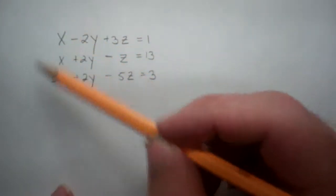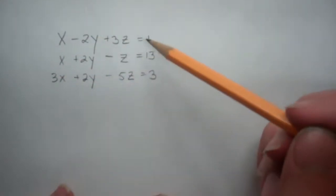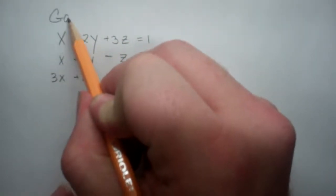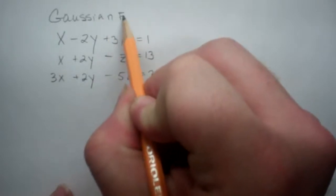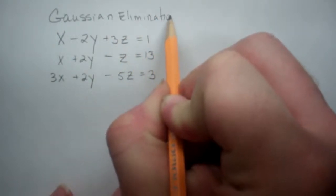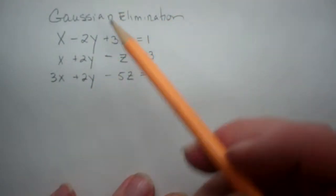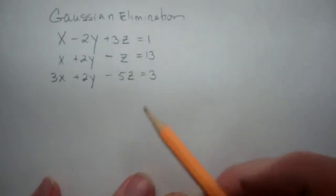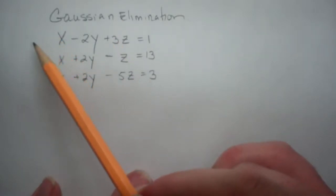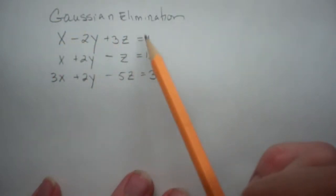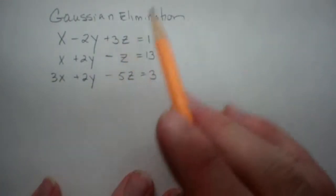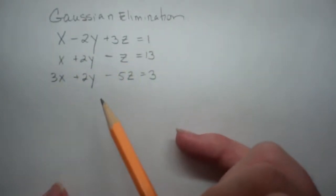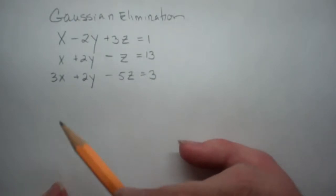In this example, we are going to solve this system of linear equations — three equations with three unknowns — using Gaussian elimination. Gaussian elimination lets us do three things: we can interchange the positions of any two equations, we can add a non-zero multiple of one equation to another equation (which is exactly what we do in the elimination method), and we can multiply or divide through by some non-zero constant.